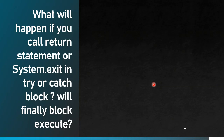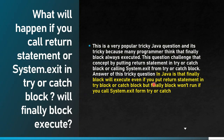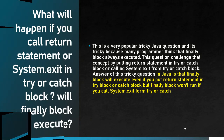Next question: what will happen if you call a return statement or System.exit() in a try-catch block — will the finally block execute? When you call System.exit(), the finally block will NOT execute. However, if you have a return statement in the try or catch block, the finally block WILL execute. So in Java, the finally block executes even with a return statement in try or catch, but not when System.exit() is called.